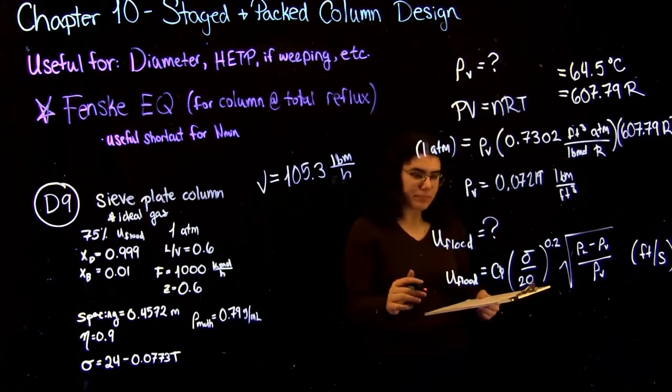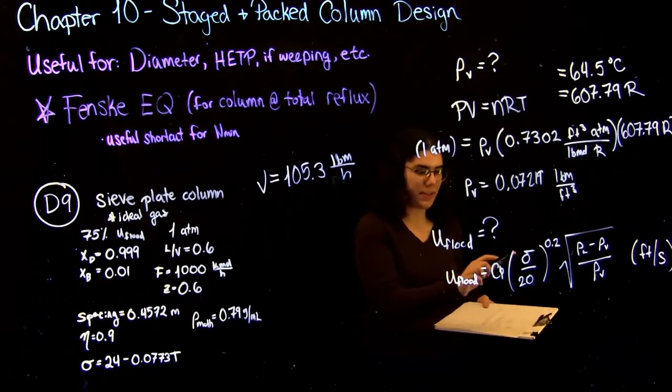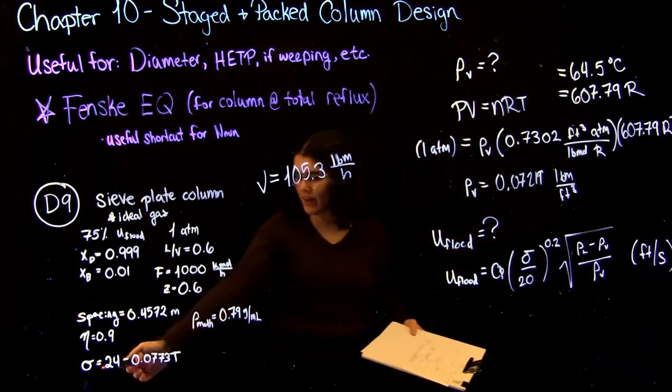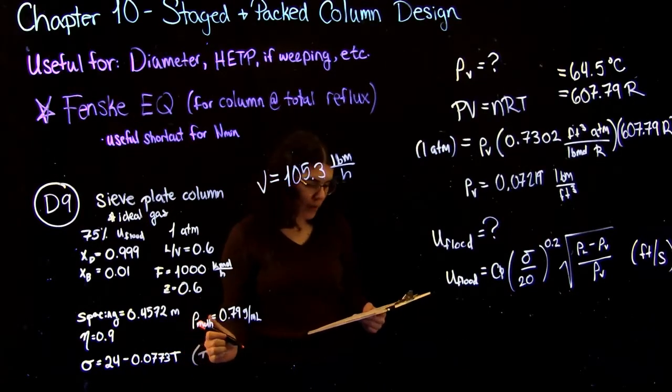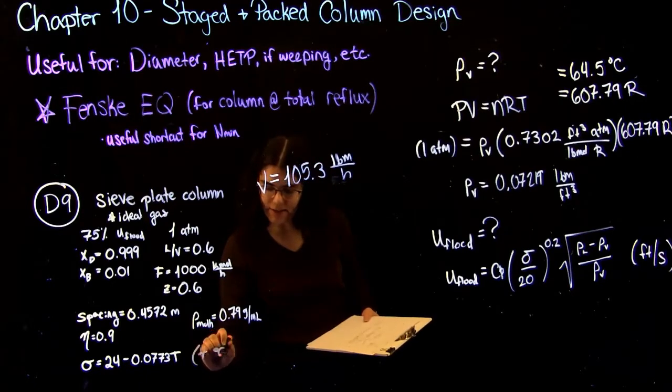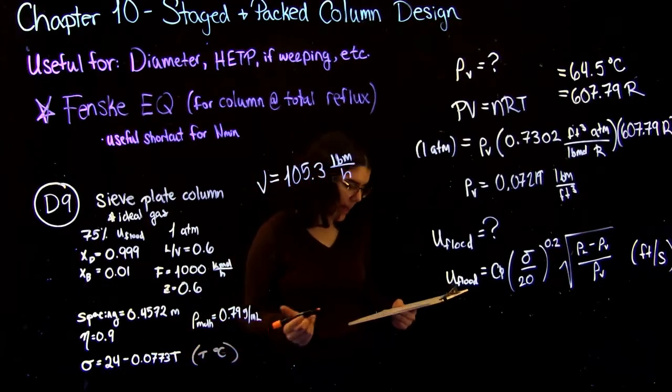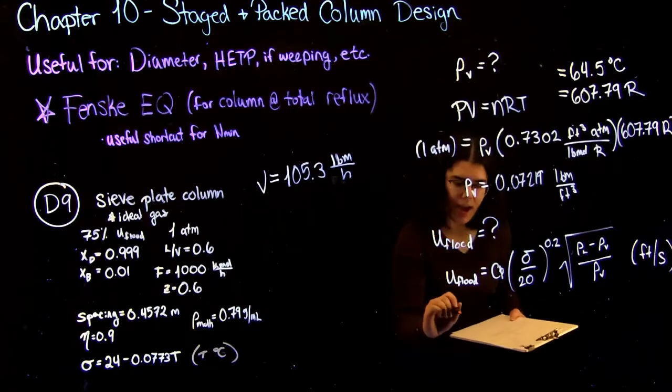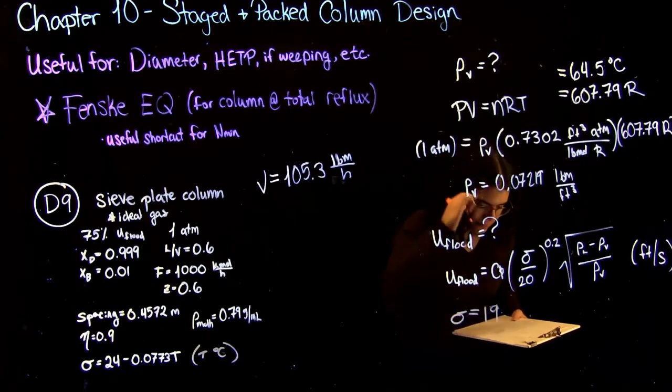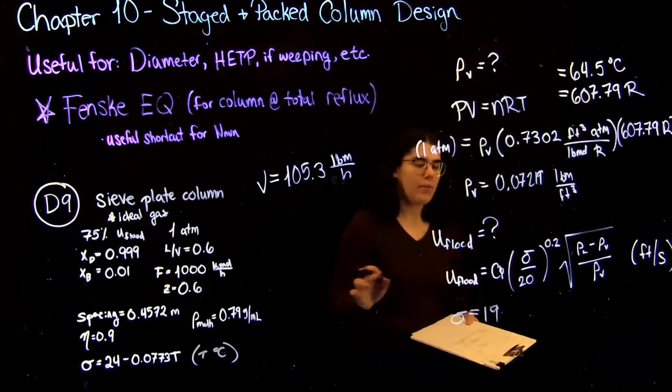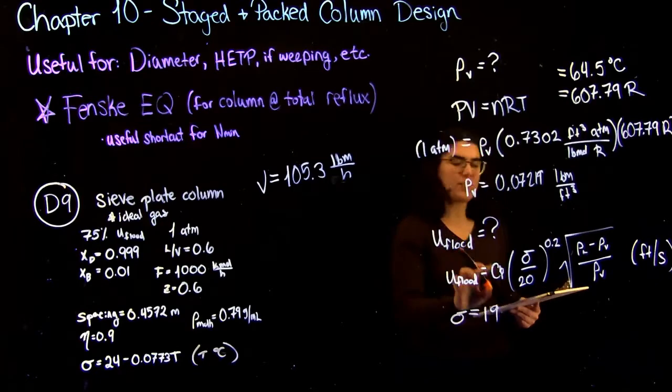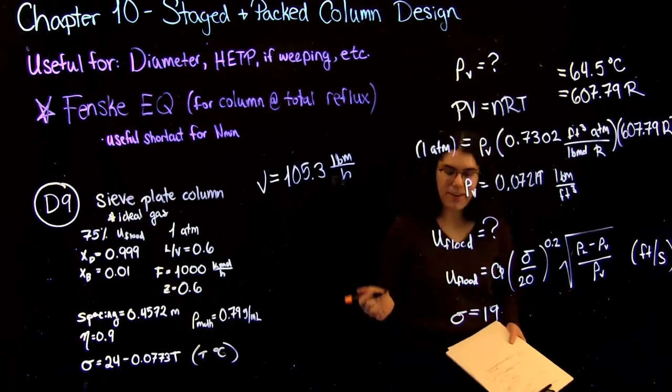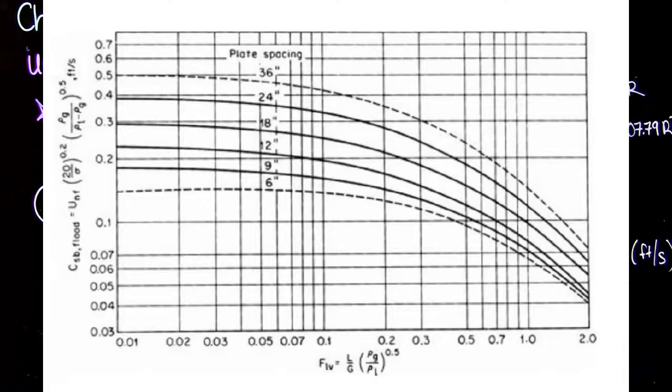So the first thing we can find really easily is the surface tension because we were given an equation for it here. Just as a function of temperature, I believe the temperature was in degrees Celsius for this correlation. But if you just simply plug it in, you will get that it's equal to 19. And now we can move on to finding our C_b. So this is, sorry, C_p. This is just known as the capacity factor, and you can find it using a graph.